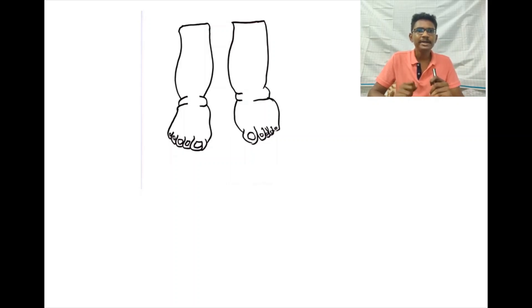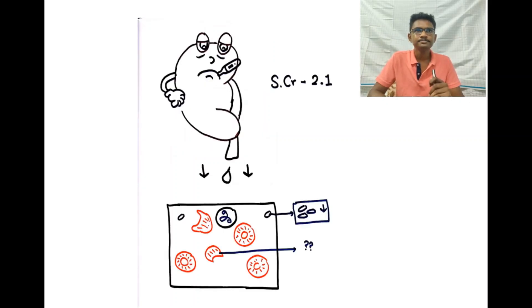Okay, then when checked for her KFT, her serum creatinine was 2.1. It's alarmingly high for a 20-year-old girl. Then this also represents that she has oliguria. She couldn't pass urine. She developed pedal edema and her creatinine was increasing.